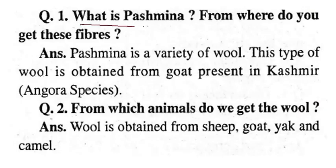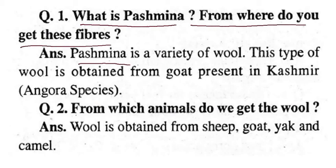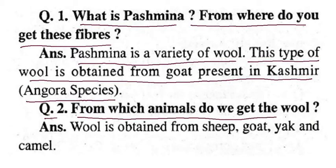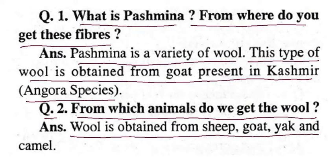Question: What is pashmina and from where do you get these fibers? Pashmina is a variety of wool. This type of wool is obtained from goats present in Kashmir, of the Angora species. Question two: From which animal do we get wool? Wool is obtained from sheep, goat, yak, and camel.